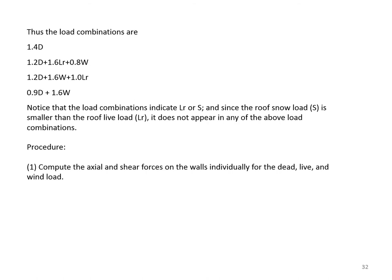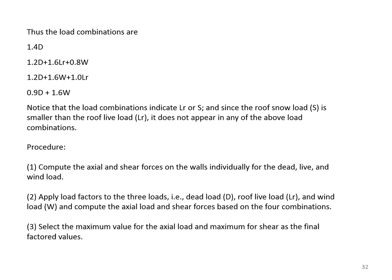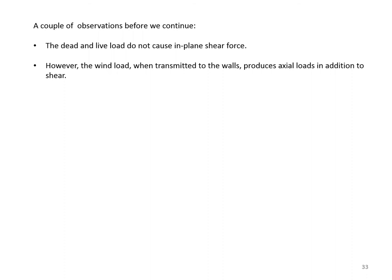Two observations: the dead load and live load do not cause in-plane shear forces in the walls. However, the wind load when transmitted to the walls produces axial loads in addition to shear. The tributary width for gravity load on each wall is 54/2 = 27 feet. We assume roof loads are linear throughout the length of the north and south walls, so we calculate for one foot of wall length.